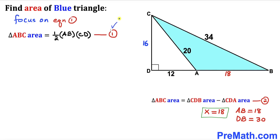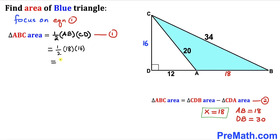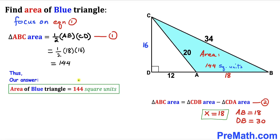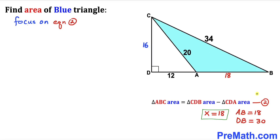Now let's apply Equation 1. We know AB = 18 and CD = 16. So the area of the blue shaded triangle ABC is one-half times 18 times 16, which simplifies to 144. The area of triangle ABC is 144 square units.